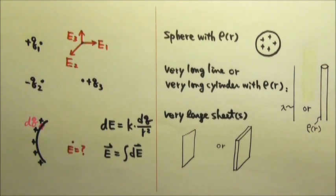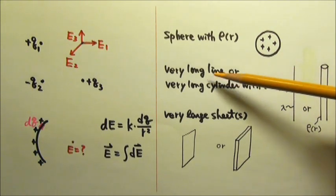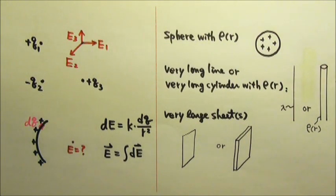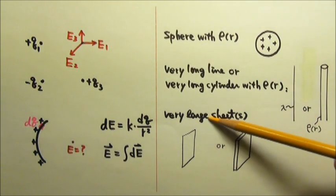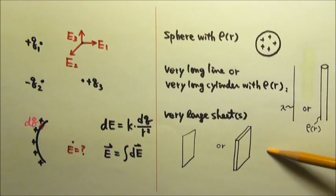We can use Gauss's law to find the electric field produced by spherically symmetric charge distribution, very long cylindrically symmetric charge distribution, or very large sheet or sheets of charge.